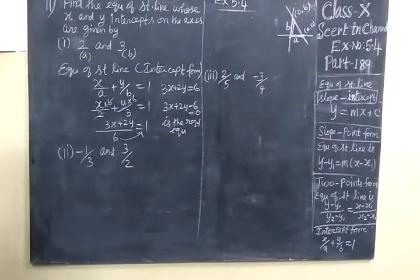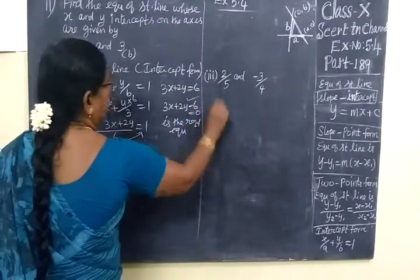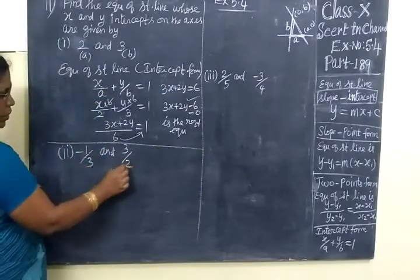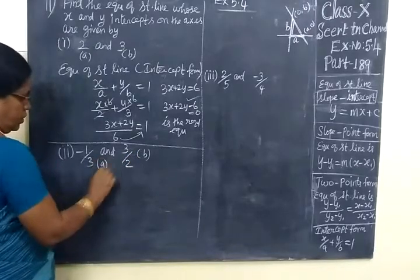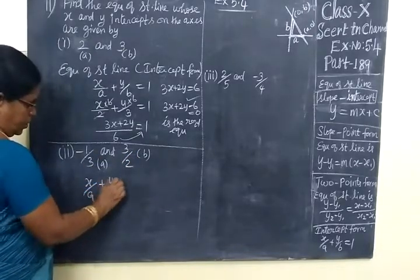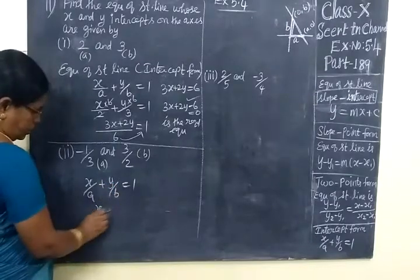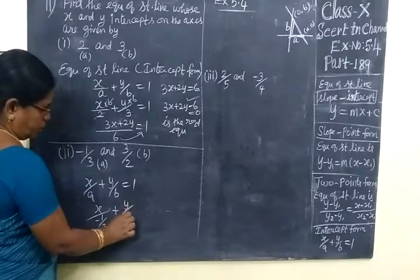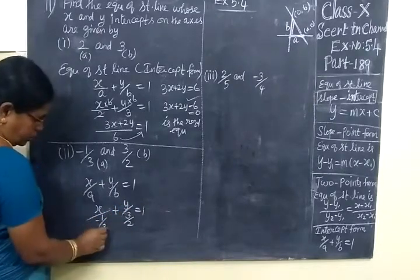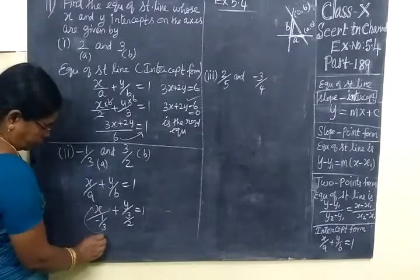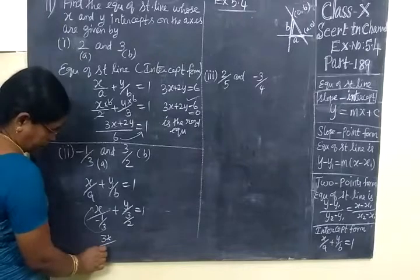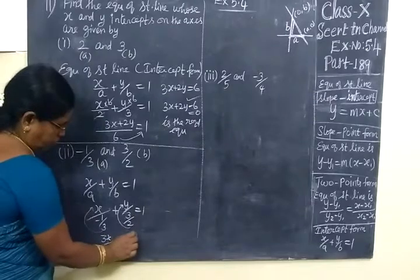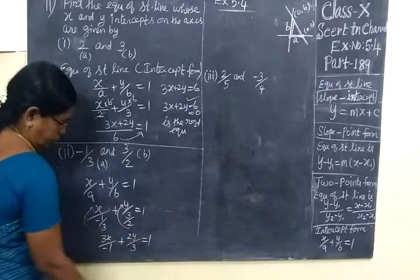Then after that, second problem, A is minus 1 by 3 and B is 3 by 2. So X by A plus Y by B equal to 1. So X by minus 1 by 3, then Y by 3 by 2 equal to 1. The 3 will go this side. So 3x by minus 1 plus 2 will go to the numerator, so 2y by 3 equal to 1.